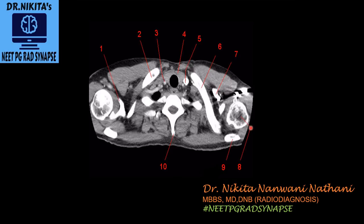Today we're learning about normal anatomy in CT thorax and how to identify structures. First, bones are white on CT — always look at the bone cortex. Next, identify whether it's a contrast or non-contrast CT by looking at the vessels: white vessels indicate contrast; gray vessels indicate non-contrast. Soft tissues and muscles are gray, black areas are air or fat (air is more black, fat is less black), and white on CT is bones, acute hemorrhage, or calcification.